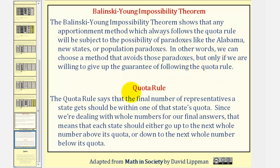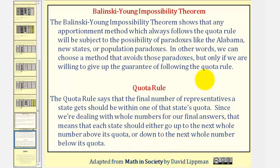We've already covered the quota rule, but here it is again. The quota rule says that the final number of representatives a state gets should be within one of that state's quota. Since we're dealing with whole numbers for our final answers, that means each state should either go up to the next whole number above its quota or go down to the next whole number below its quota. That's going to do it for this lesson. I hope you found this helpful.